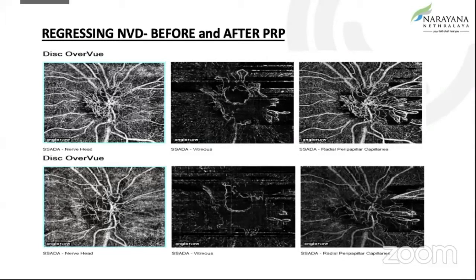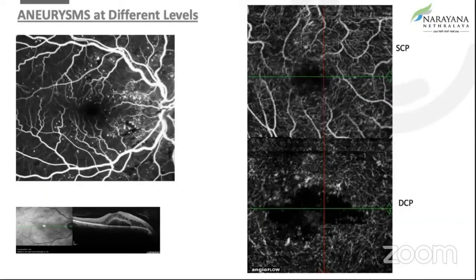The automated segmentation is also available. This is the regressing NVD before and after PRP — in the panel above, the NVD is extensive, but post-PRP, you see it regressing. We are also able to see aneurysms at different levels, and especially with macular edema, we are able to see them at the DCP level as well.